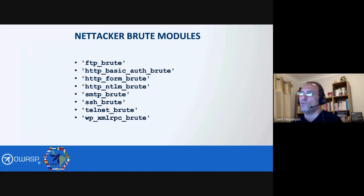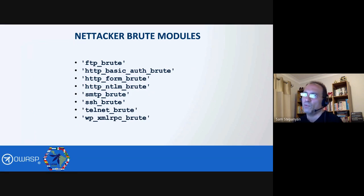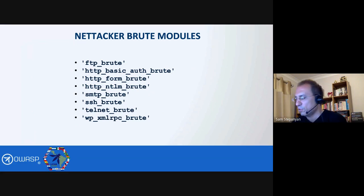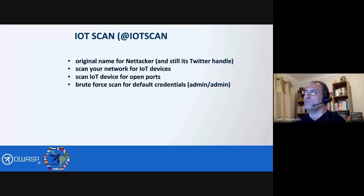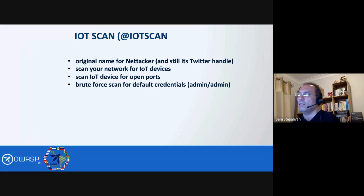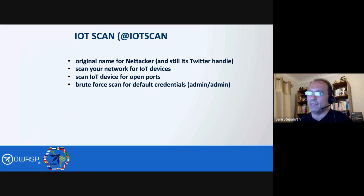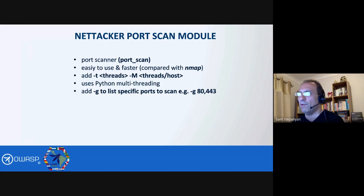These are the Nettacker brute forcing modules. Nettacker can brute force over FTP protocol, HTTP basic auth, HTTP forms, HTTP NTLM, SMTP, SSH, Telnet, and WordPress users using the XML-RPC module. This makes it a very useful and unique tool because you can scan, brute force, and do information gathering all in one tool. Nettacker was originally called IoT Scanner — it was created to scan the network for IoT devices, scan them for open ports, and brute force for default credentials like admin/admin, which is a very popular username and password for many IoT devices. Now it's grown into much more than an IoT Scanner.